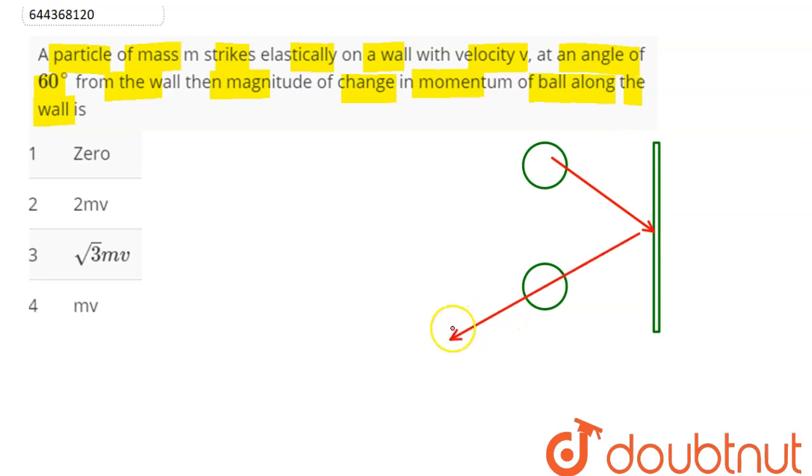So here we can say that the angle 60 degrees is given with the wall. So we can say here this velocity suppose is V. Hence this angle will also be 60 degrees.